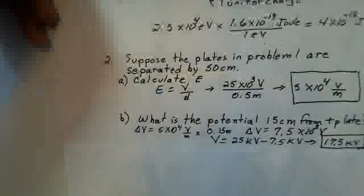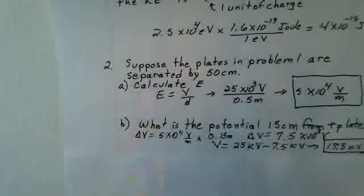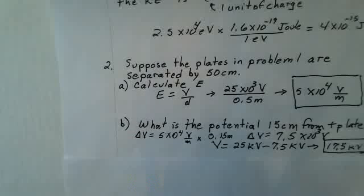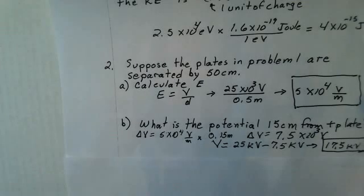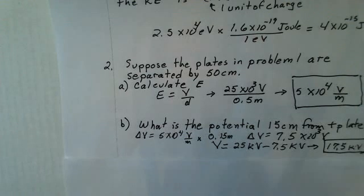And then, what would be the potential 15 centimeters away from the plus plate? Well, our change in potential is going to be our electric field here, 5 times 10 to the 4th volts per meter multiplied by the number of meters we are away. That's the 0.15 meters. So, we've moved down a potential 7.5 times 10 to the 3rd volts.